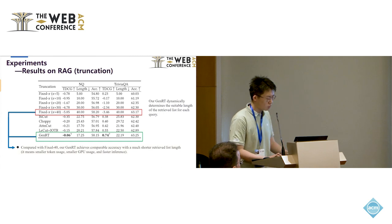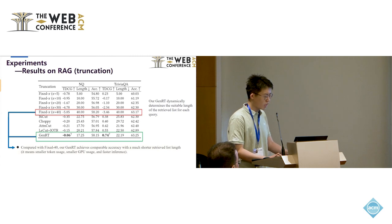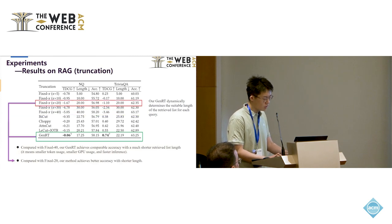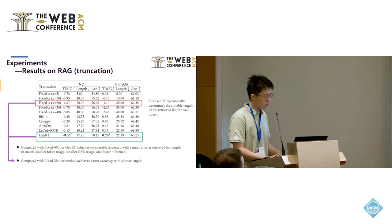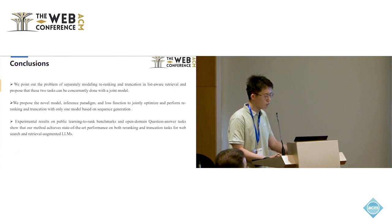This is our experimental results on the retrieval augmented generation for truncation task. We can see that compared with the fixed 40 lengths, our method achieves comparable accuracy with a much shorter retrieved list. It means smaller token usage, smaller GPU usage, and faster inference for large language models. Compared with the fixed 20 lengths, our method achieves better accuracy with shorter lengths. Our method can dynamically determine the suitable lengths of the retrieved list for each query.